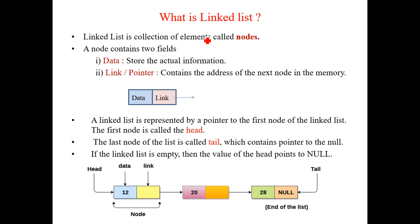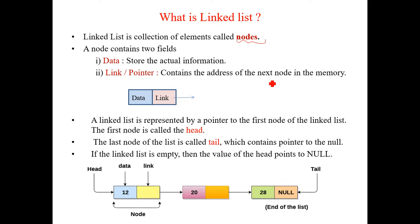A linked list is a collection of elements called nodes. A node consists of two fields: the data field, which stores the actual information, and the link or pointer field, which contains the address of the next node in memory.